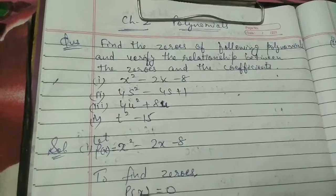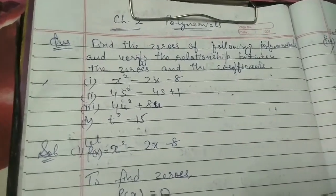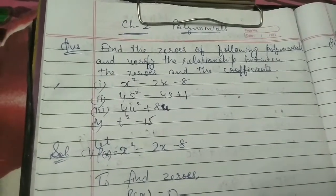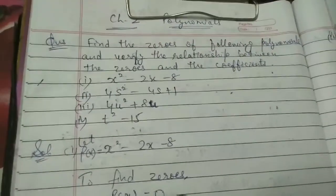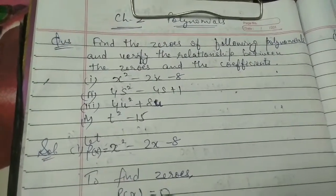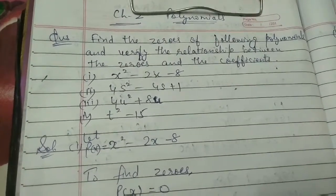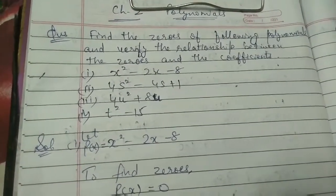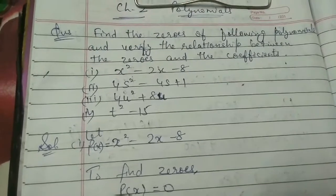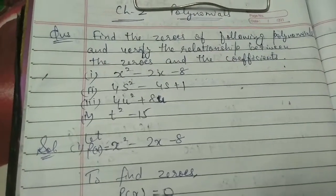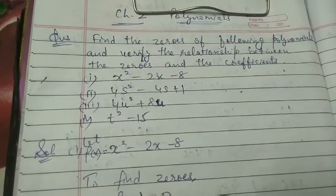Hello dear students, we have to do chapter number 2, exercise 2.2 on polynomials. Here we have to find zeroes of the following polynomial and verify the relationship between the zeroes and the coefficients, which are quadratic polynomials. That means the maximum power is 2.